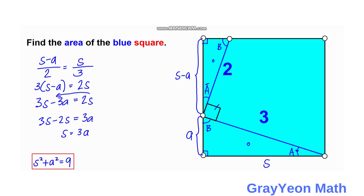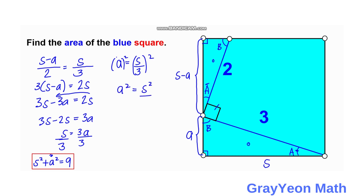Since we are looking for the value of S squared to substitute into the previous equation, we need to represent A in terms of S. Dividing both sides by 3, we get A equals S over 3. Since the first equation has an A squared term, we square both sides, giving us A squared equals S squared over 9.